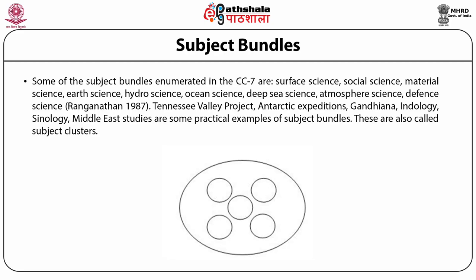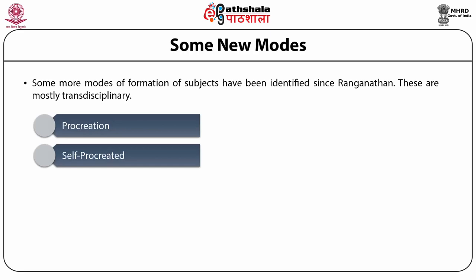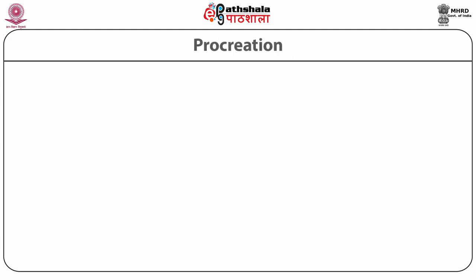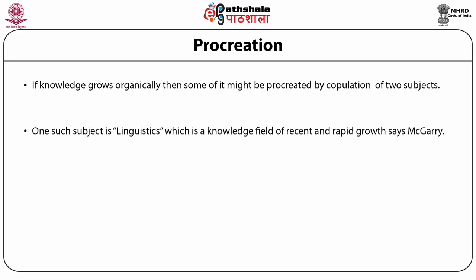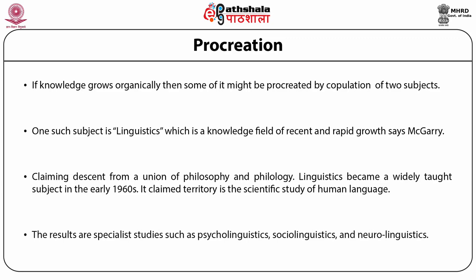Some new modes: Some more modes of formation of subjects have been identified since Ranganathan. These are mostly interdisciplinary or transdisciplinary in nature — made by procreation, self-procreated subjects, analogical mode of creation, instrument-based subjects, and annexation mode of creation of subjects. If knowledge grows organically, then it might be procreated by copulation of two subjects. One such subject is linguistics — a knowledge field of recent and rapid growth. Claiming descent from the union of philosophy and philology, linguistics has become a widely taught subject since the early 1960s, with specialist studies such as psycholinguistics, sociolinguistics and neurolinguistics.